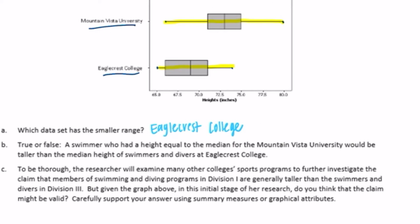True or false, a swimmer who had a height equal to the median for the Mountain Vista University would be taller than the median height of swimmers and divers at Eagle Crest College. So a swimmer who had the median height for Mountain Vista, a swimmer right here, there's the median. So a swimmer with that height would be taller than the median height of swimmers at Eagle Crest. Well, yes, that's true. This is about maybe like 73 inches, and this is in the middle there, maybe like 69 inches. So yeah, about 4 inches taller. So that is true.